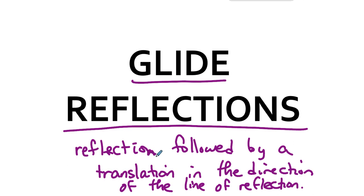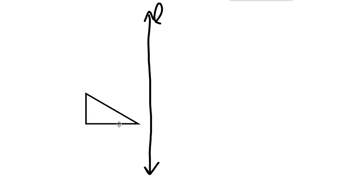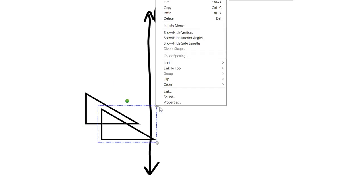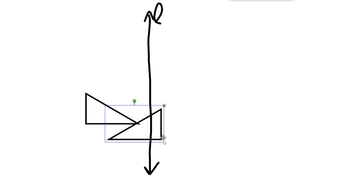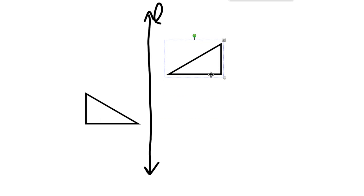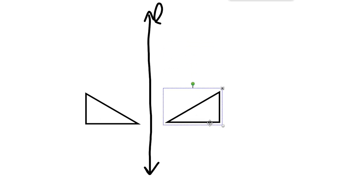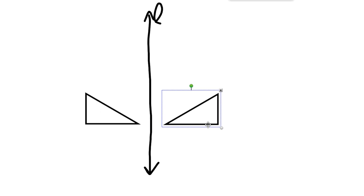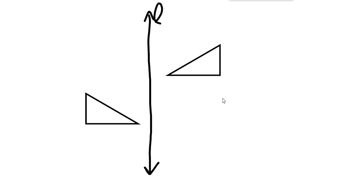It's a reflection and then a translation in the reflection line's direction. So you have some line — it's the line of reflection. You have some triangle, looks like this, and you want to do a glide reflection. That involves a reflection and then a translation along the direction of the line of reflection. We translate in this direction, or in that direction — it doesn't really matter.